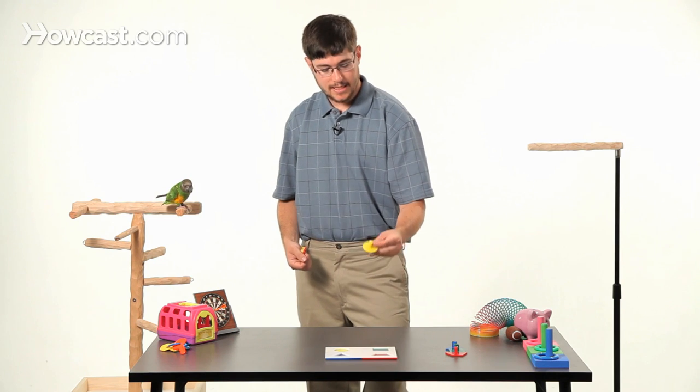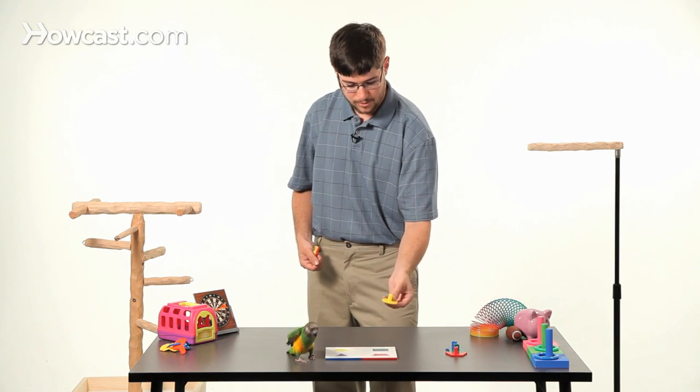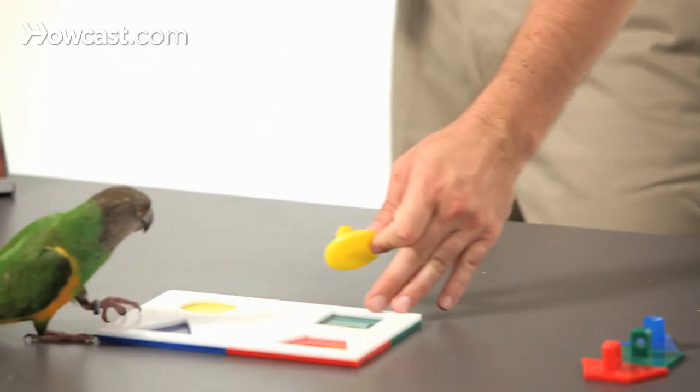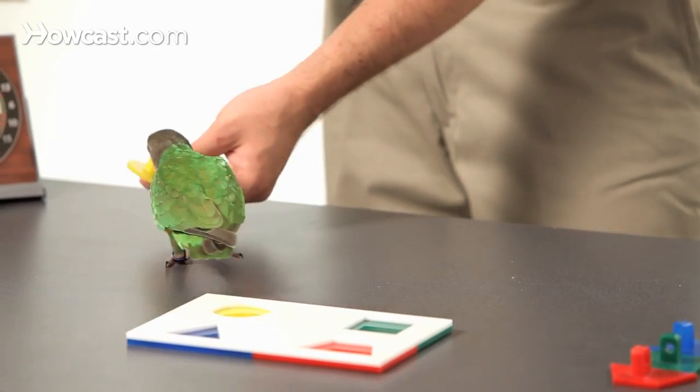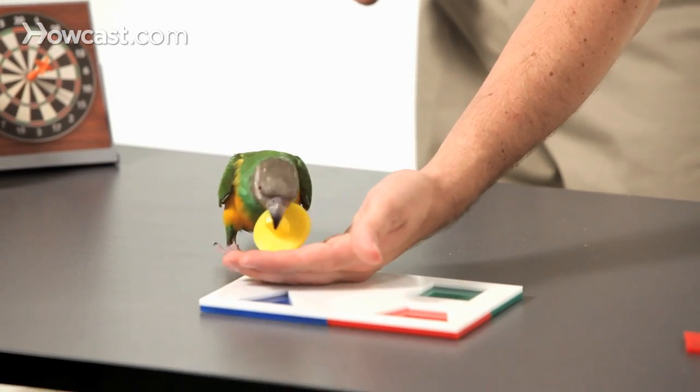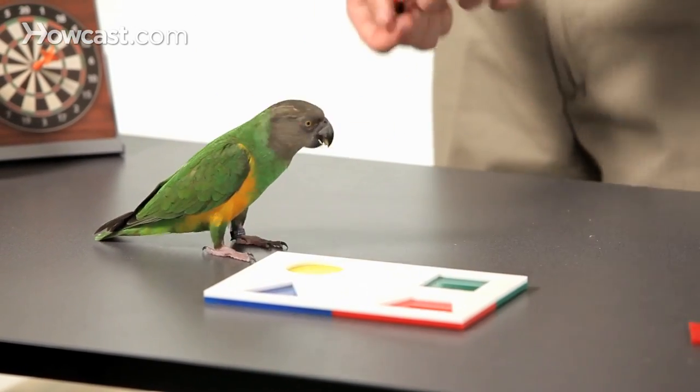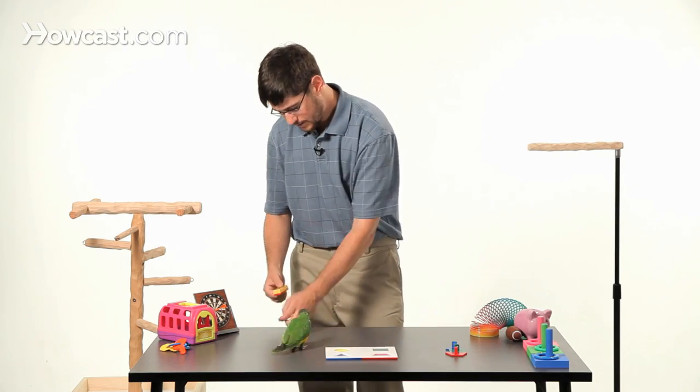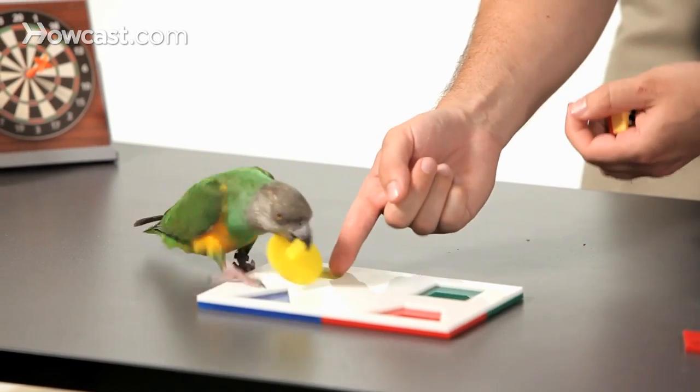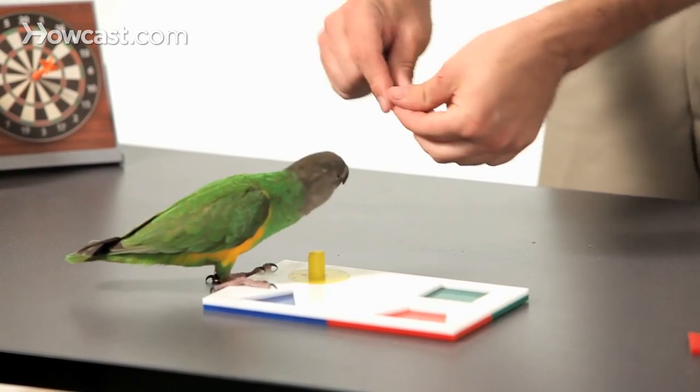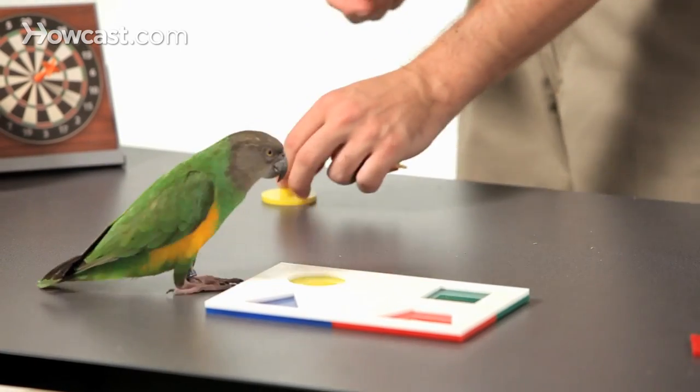So the easiest piece to teach is the circle because it has no square ends, so it goes in no matter which way the parrot turns it. So first you start teaching a puzzle by teaching the parrot to put the circle in here by having a fetch to your hand and you put your hand over the circle. Go fetch. Then you can get the bird to drop the piece somewhere near the circle. She already knows how to do it. She drops it right in.